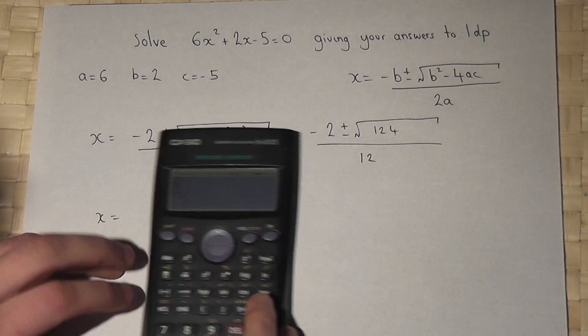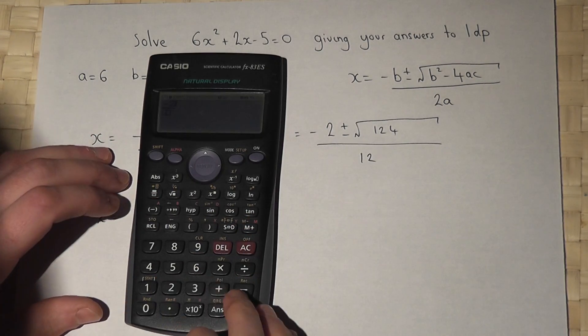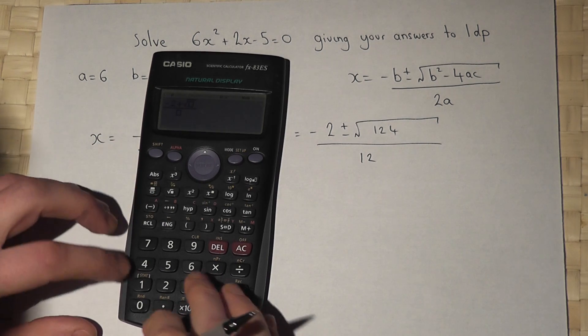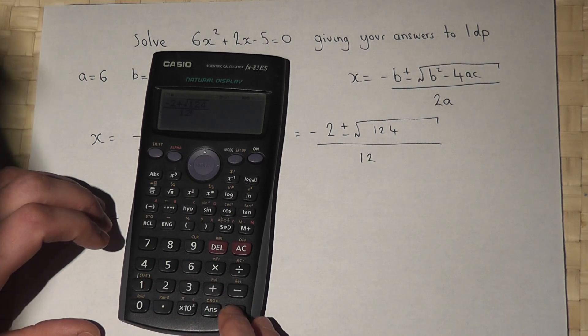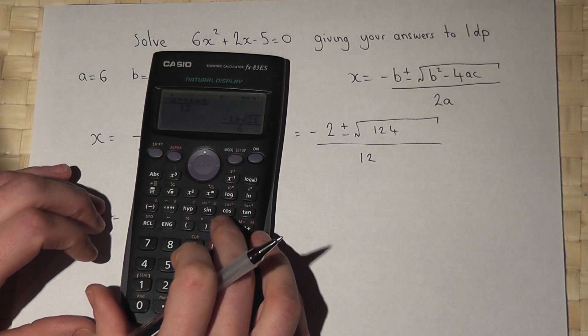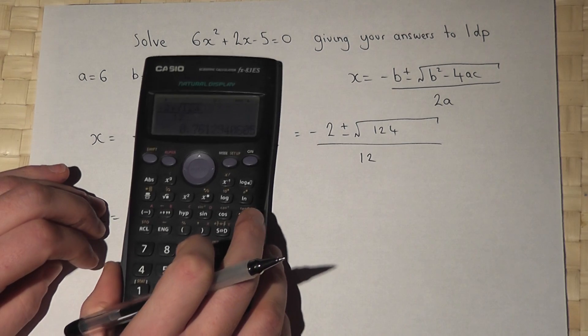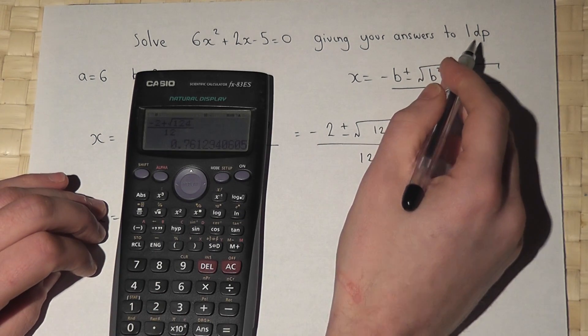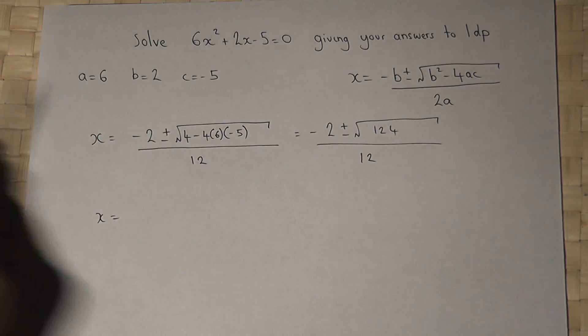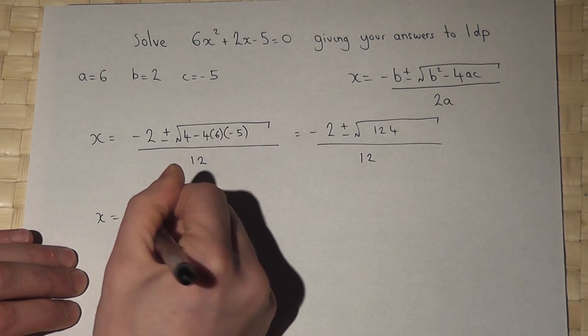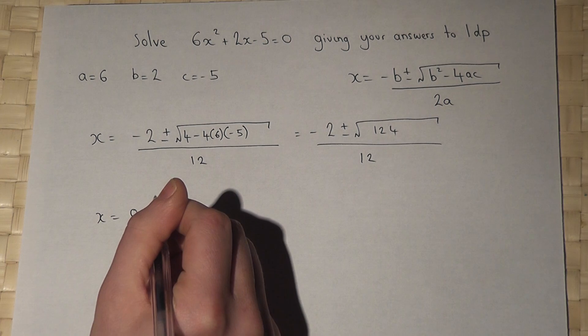Fraction: minus 2 plus the square root of 124 divided by 12, press enter, press the SD button, and we want it to 1dp. The answer is 0.8, so x equals 0.8 is our first solution.